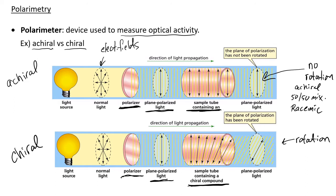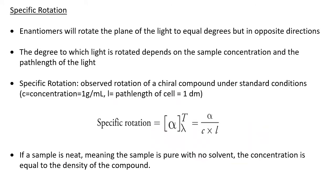So if your rotation is zero, it could be one of two things: it could be an achiral compound, or it could be a racemic mixture of enantiomers, in which case the rotations would cancel each other out. That rotation can be used to calculate something called the specific rotation. Enantiomers will rotate light to an equal magnitude but opposite in direction — equal degrees, but opposite direction. The degree to which the light gets rotated depends on sample concentration and the path length of the light.